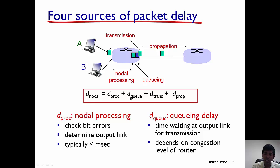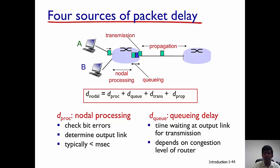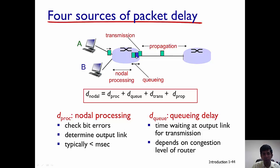The next component of delay is queuing delay at a router. Queuing delay occurs if the packet arrival rate is greater than the output rate. It is the amount of time that a packet has to wait in the buffer before it can get transmitted. In this figure, the blue and green packets are in the buffer, waiting and experiencing queuing delay.